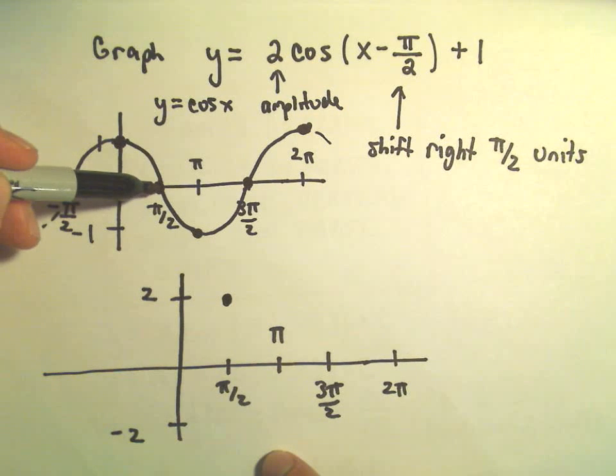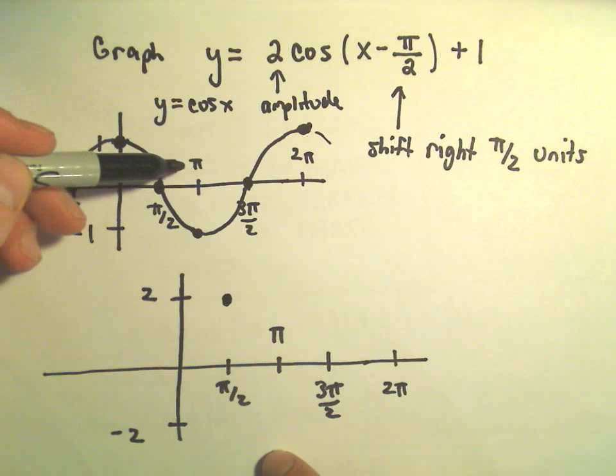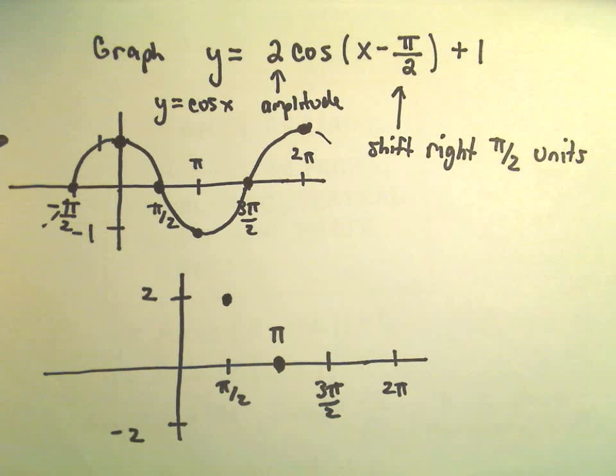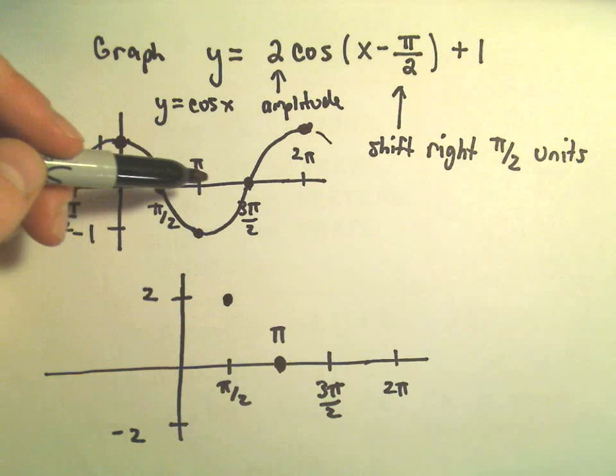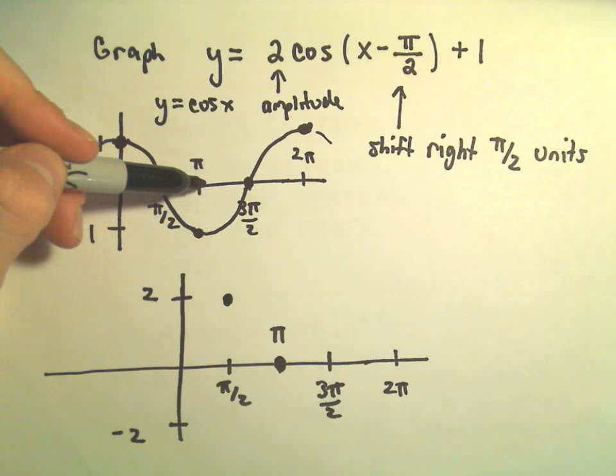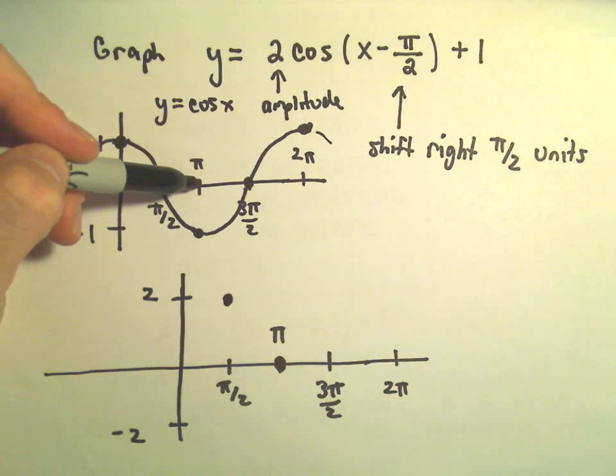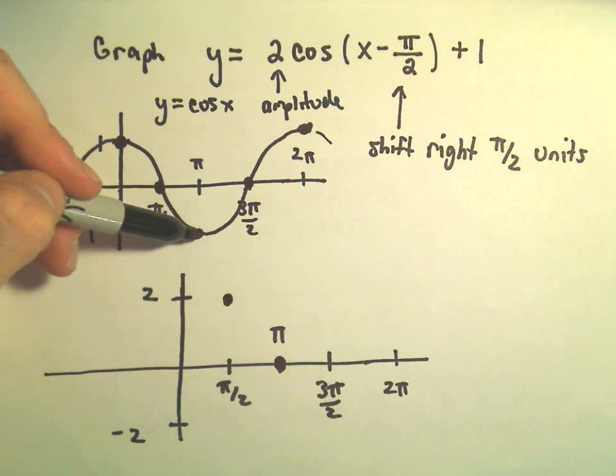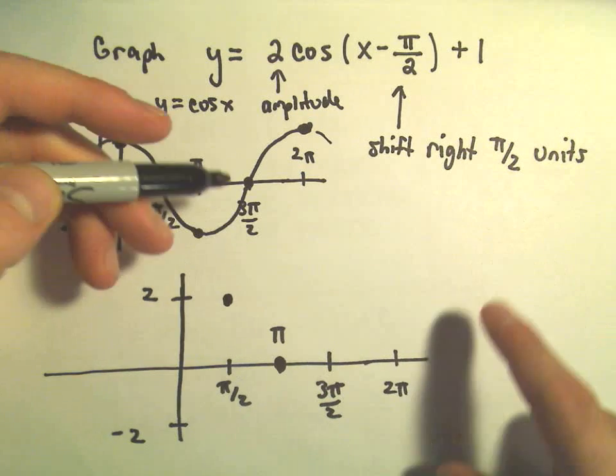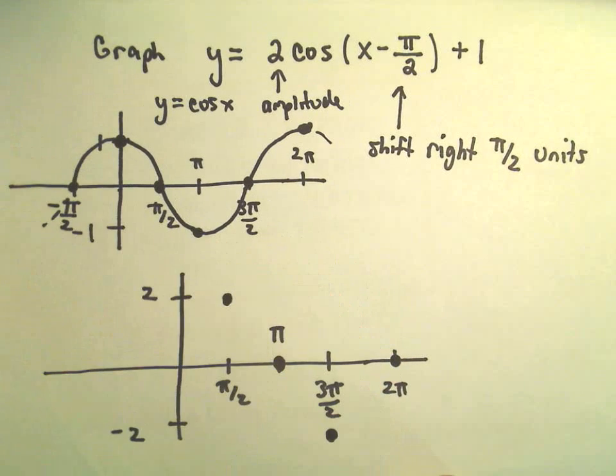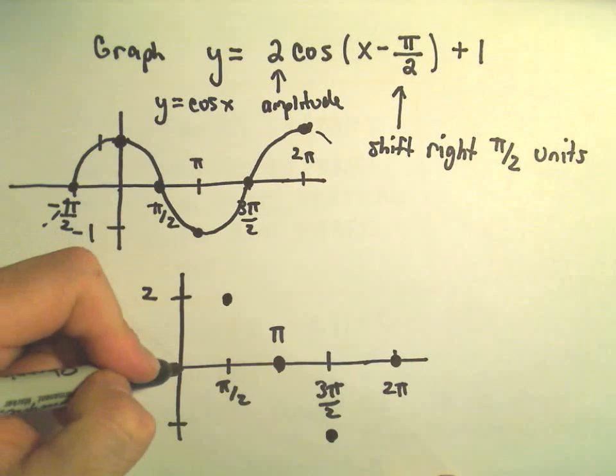The original point that was at pi over 2, 0, if that gets shifted over pi over 2 units, we would now be sitting at pi. So we'll still be getting 0 out there. At 3 pi over 2, if we take the value that was at pi, we had negative 1. So when we change the amplitude, that'll go from pi down to negative 2. But we're just moving that point over pi over 2 units. So at 3 pi over 2, we'll be down here at negative 2. And then we'll be back at 0, etc.